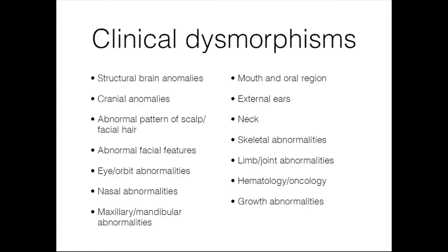There are a number of clinical dysmorphisms commonly seen in individuals with genetic disorders — not just Down syndrome but all genetic disorders. These can point us toward a genetic disorder as a cause of a disability. We can see structural brain abnormalities such as microcephaly, cranial anomalies such as a flat or very prominent occiput, an abnormal pattern of scalp or facial hair, the posterior parietal hair whorl, a widow's peak, abnormal facial features such as facial flatness, eye or orbit abnormalities such as epicanthal folds, and nasal abnormalities such as a low or flat nasal bridge.